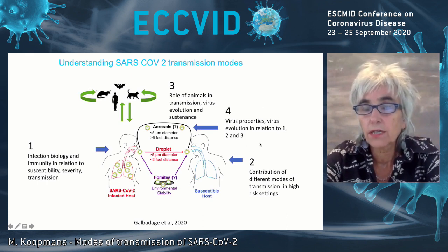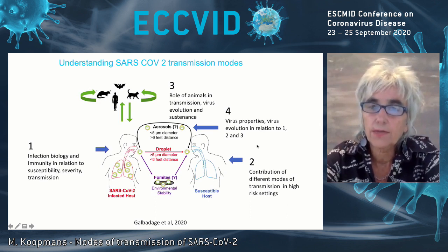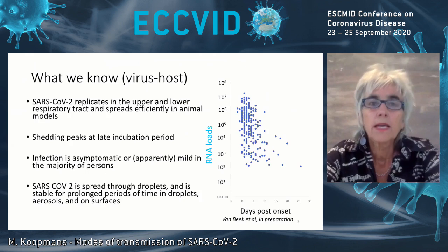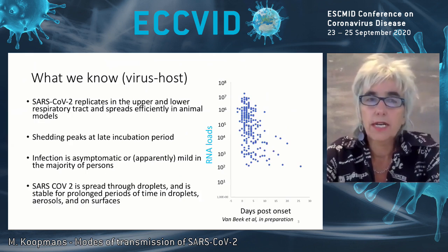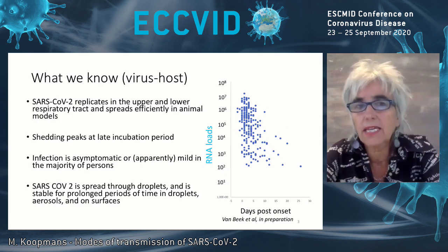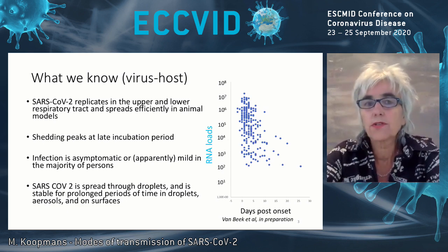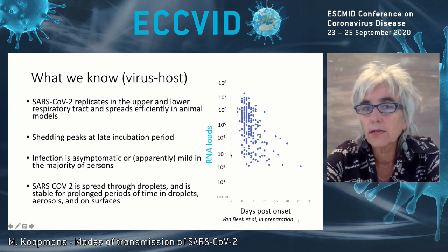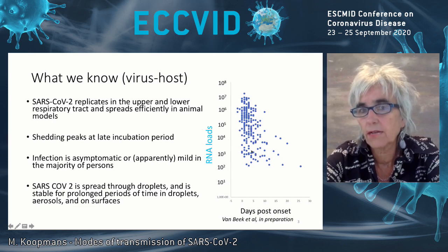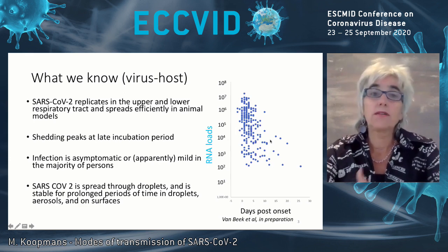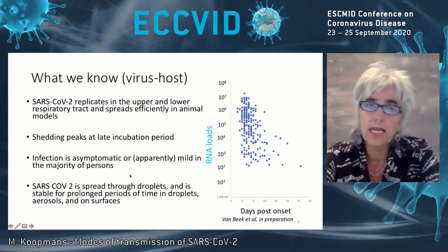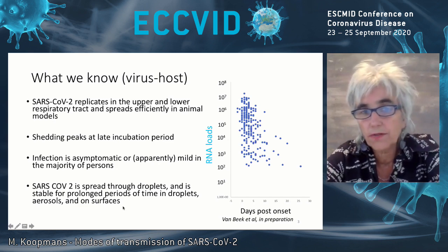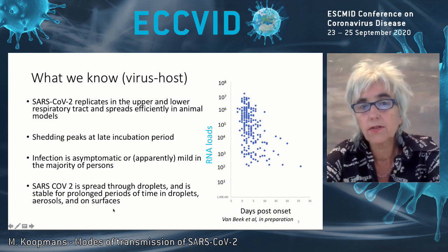And of course, we have the virus to consider, and particularly with an increasingly diversifying virus, we have to keep being aware about possible changes to its transmissibility. There are some things we are pretty sure about. It's clear that SARS-CoV-2 replicates in the upper and lower respiratory tract, demonstrated also in animal models related to transmissibility. Shedding peaks around symptom onset but may start a few days before, and high levels of viral load are seen early on. Infection can be asymptomatic or very mild in the majority of people, and SARS-2 is spread through droplets, stable for prolonged periods in droplets, and in experimental settings in aerosols and on surfaces.